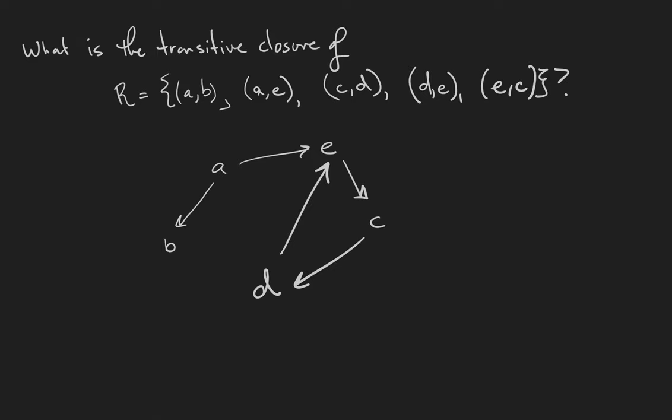It is usually easiest to think of transitivity when we have a digraph. Next, let's calculate the relation R^2 of all of the two walks in R.